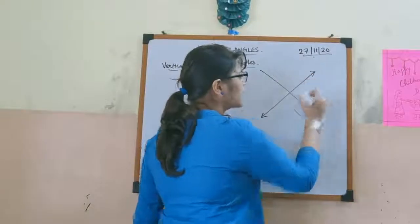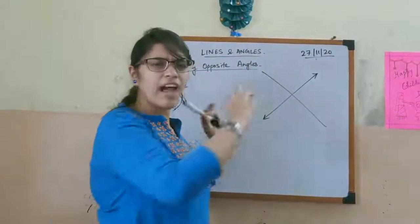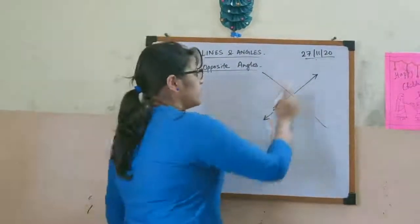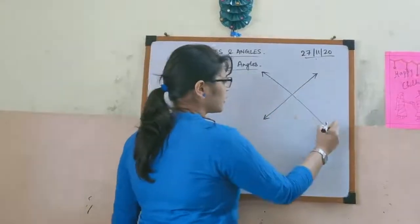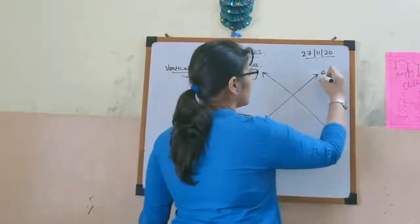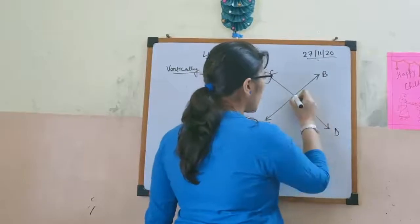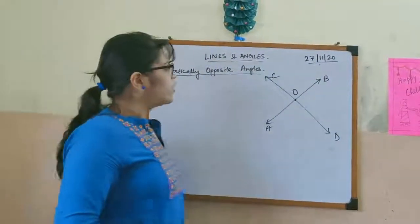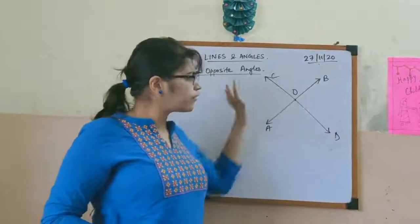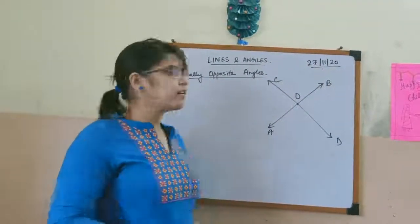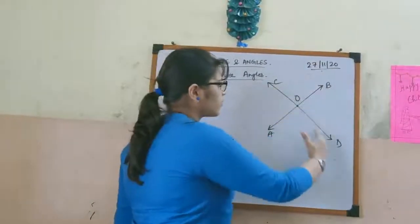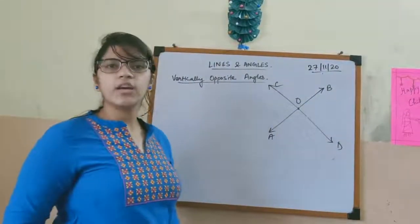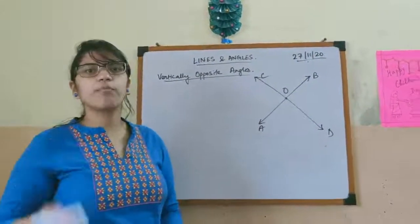A straight line means we will have arrows on both sides. So this is one line and this is another line. I can name them as AB and CD, and they intersect at a point O. Whenever we have this kind of figure, we can say that the opposite angles are equal and they are vertically opposite to each other.